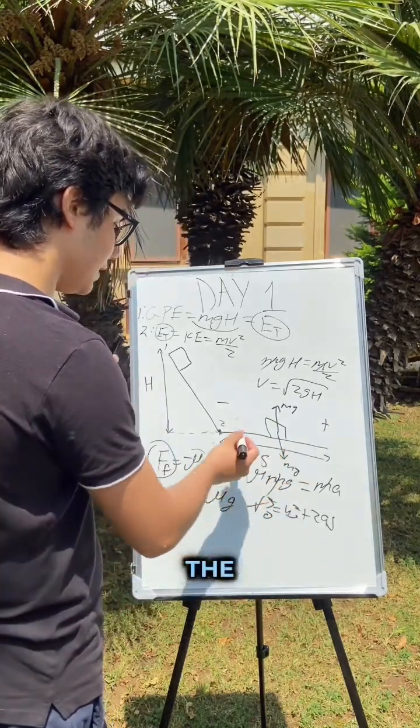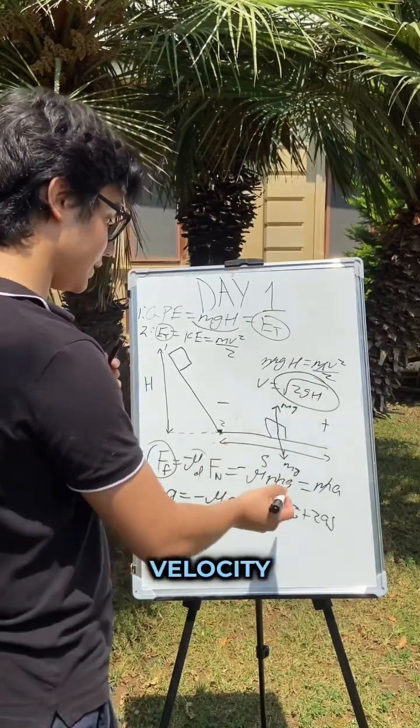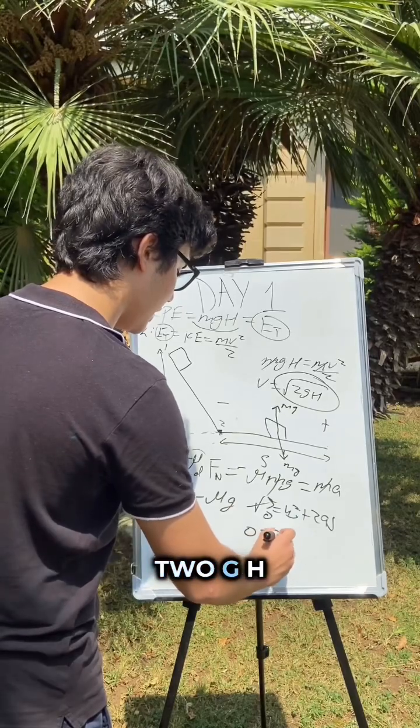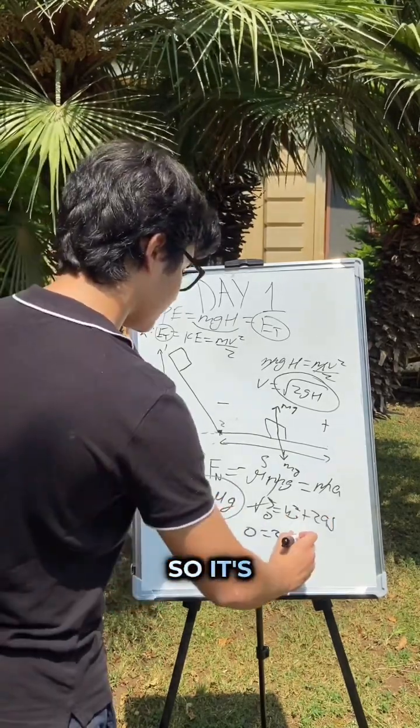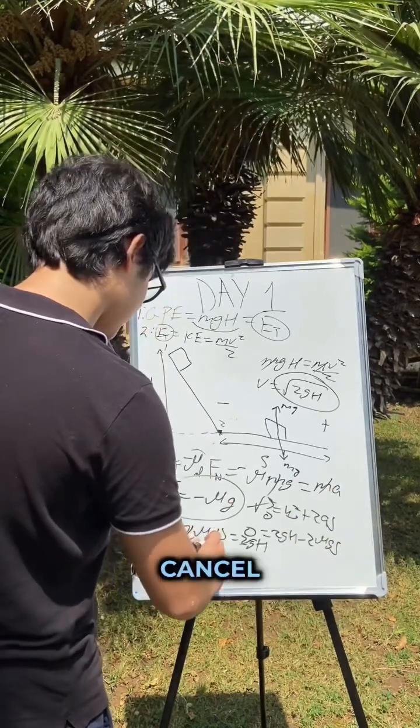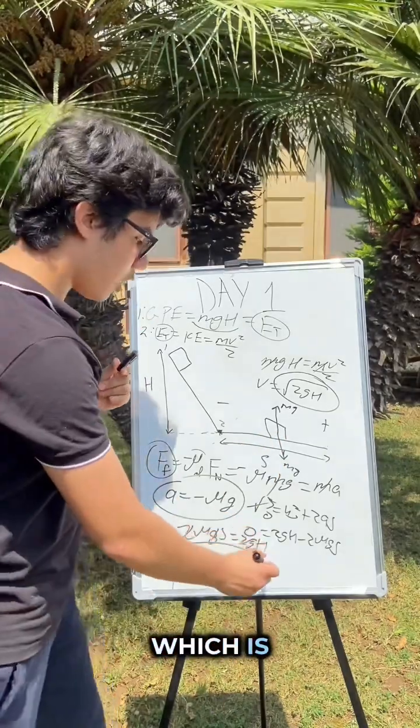The u here is the initial velocity, which is the velocity right over here. So we can say that zero equals u squared, which is 2gh plus 2as. This is our acceleration right over here, so it's gonna be minus 2 mu g s. The 2g's cancel out, and so h equals mu s, which is option d.